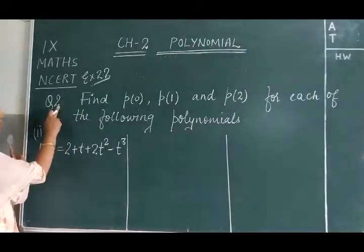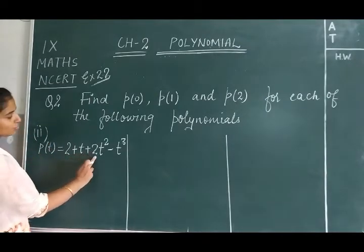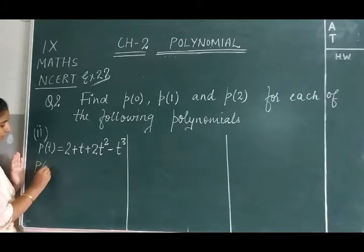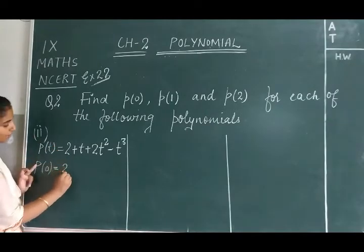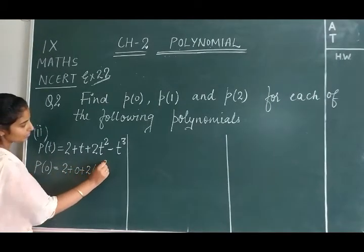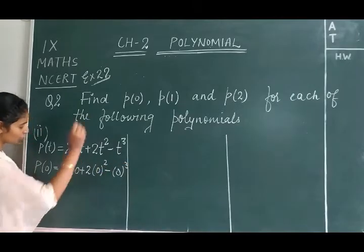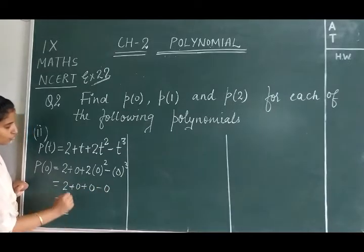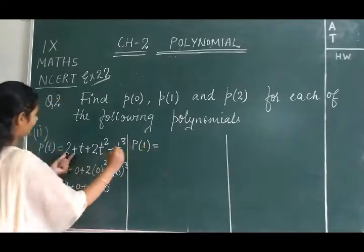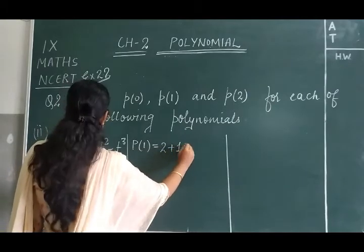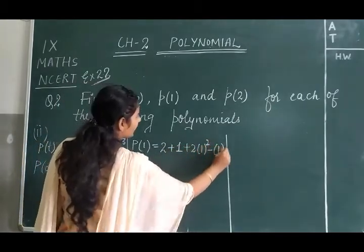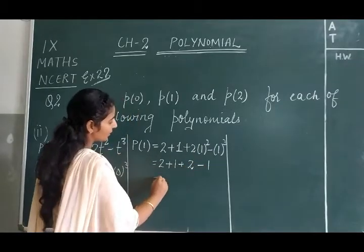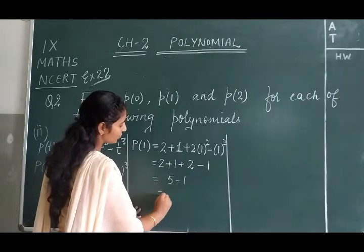Now the second part of question number 2. The polynomial is p(t) = 2 + t + 2t² - t³. For P(0), we put t = 0: 2 + 0 + 2(0²) - 0³ = 2 + 0 + 0 - 0 = 2. For P(1), we put t = 1: 2 + 1 + 2(1²) - 1³ = 2 + 1 + 2 - 1. So 2 + 1 is 3, plus 2 is 5, minus 1 equals 4.